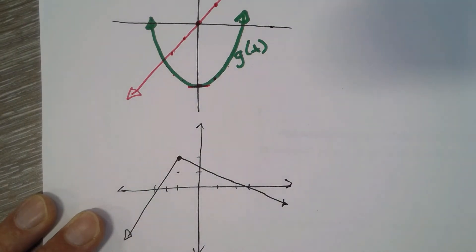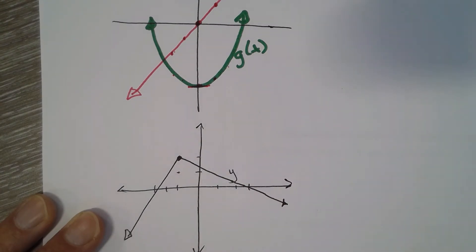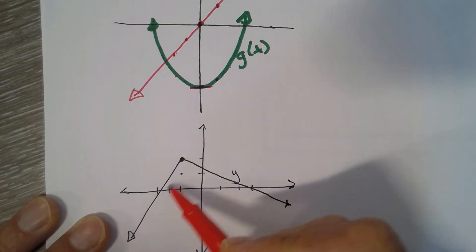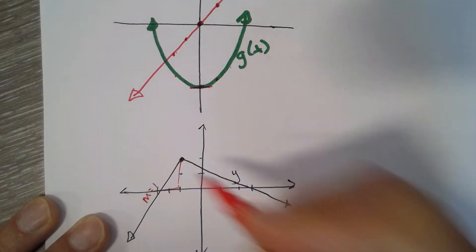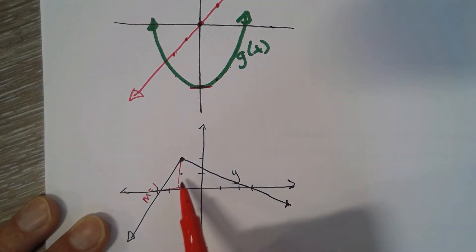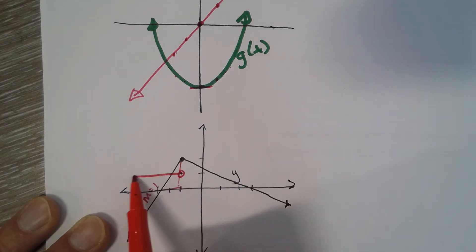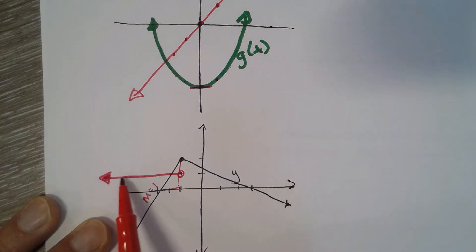So if this was y and I looked for y prime, we're looking for the slope or the derivative. The slope here goes up 1 over 2, so the slope here is one half — wait, it goes up 2 over 2, so the slope here is 1. That means the derivative up until it gets to negative 1 here is 1.